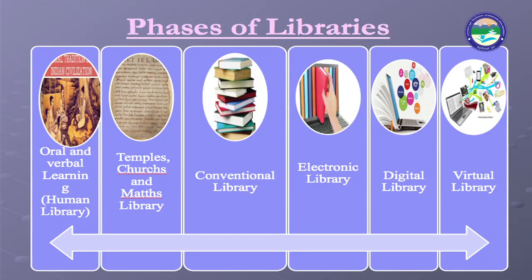An advanced phase of the electronic library is called the Digital Library. It is a collection of documents in organized form available on the internet, and it helps in compacting the size of the library and providing easy access. Examples include ebooks, magazines, articles, research papers, and more.